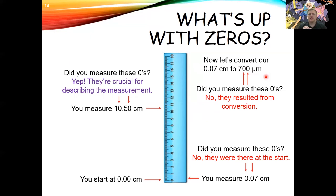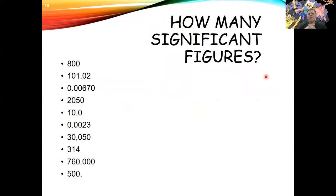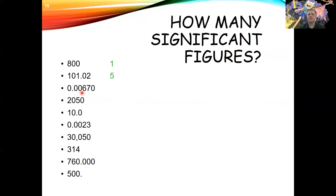Let's practice counting sig figs. For 800: one sig fig — the trailing zeros aren't significant because there's no decimal. For 101.02: five significant figures — the zeros are captured between other numbers. For 0.00670: the leading zeros are not significant, but the trailing zero is significant because there's a decimal point, giving us three significant figures: 6, 7, and 0.